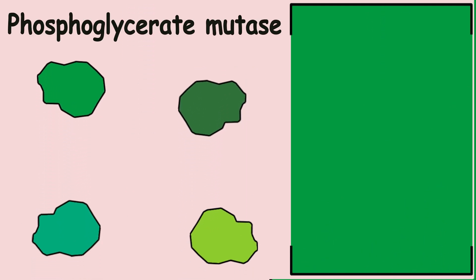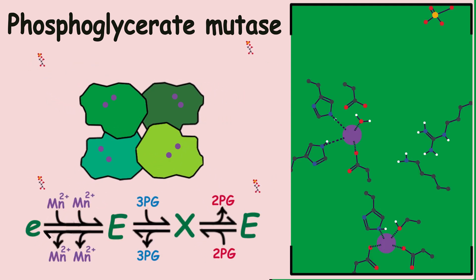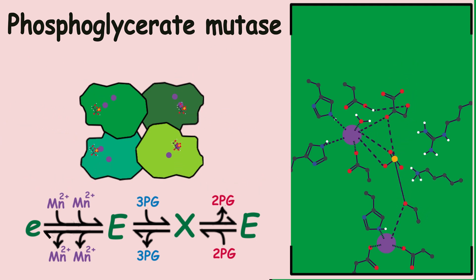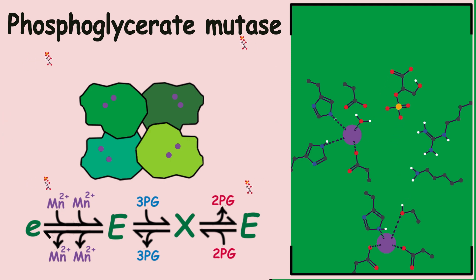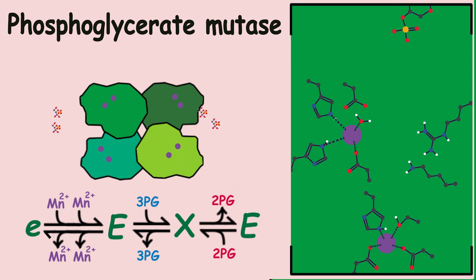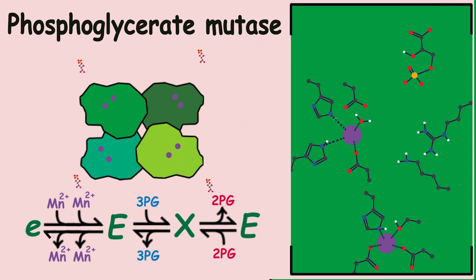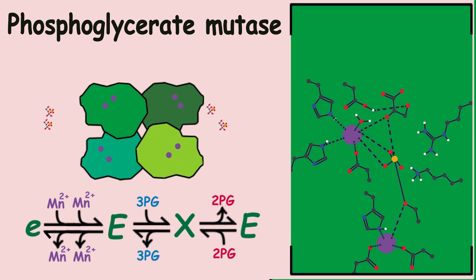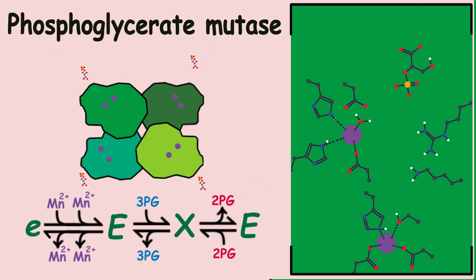The eighth reaction is carried out by the protein phosphoglycerate mutase; four of them bind to form a tetramer. The protein uses two manganese ions to hold and change the electrostatic potential of the phosphates. In this reaction, the phosphate on carbon-3 is moved to carbon-2 to form 2-phosphoglycerate, enabling access to the oxygen of the third carbon in the next reaction. This reaction is reversible.